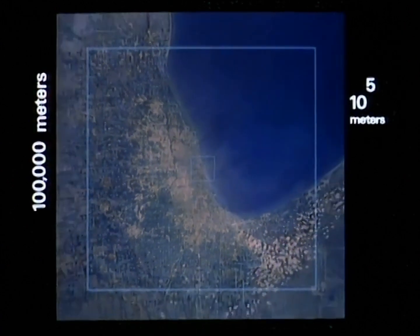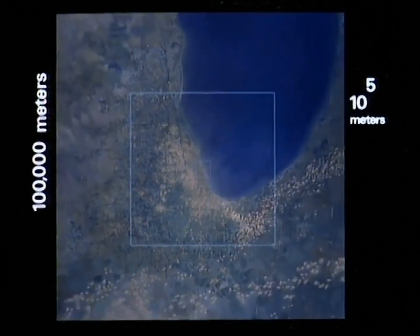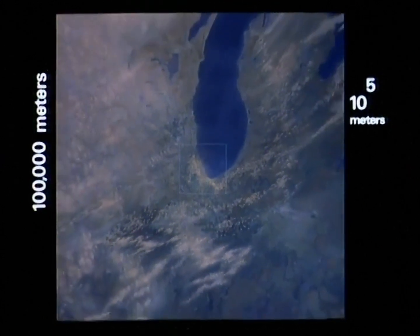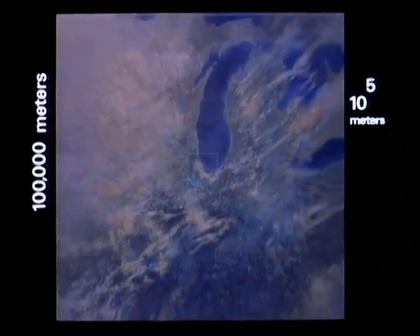Ten to the fifth meters, the distance an orbiting satellite covers in ten seconds. Long parades of clouds, the day's weather in the Middle West. Ten to the sixth, a one with six zeros, a million meters.